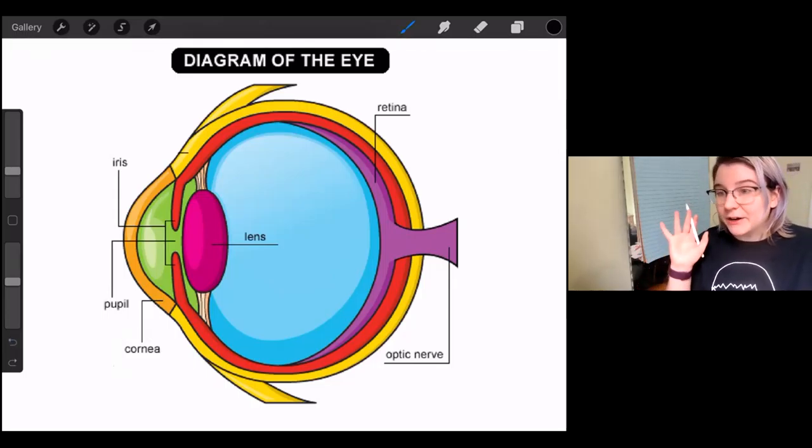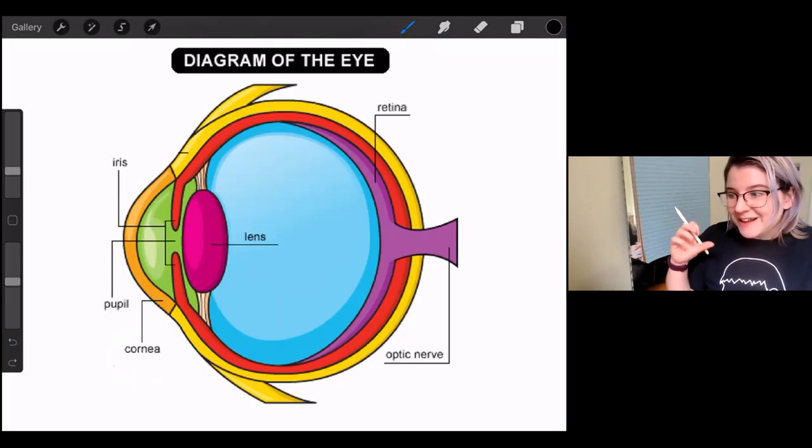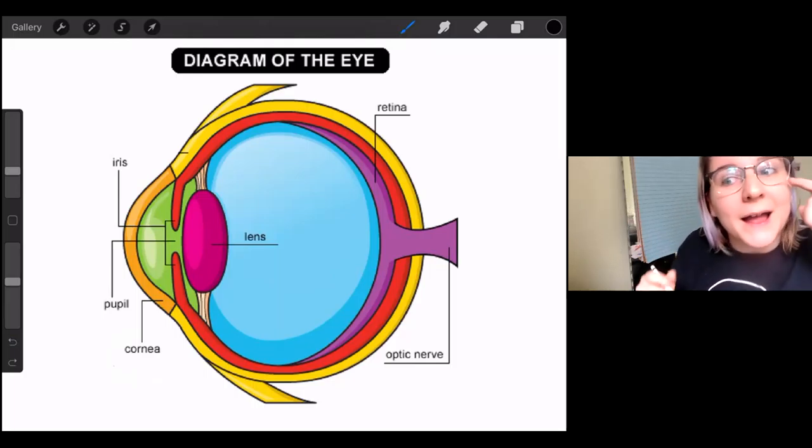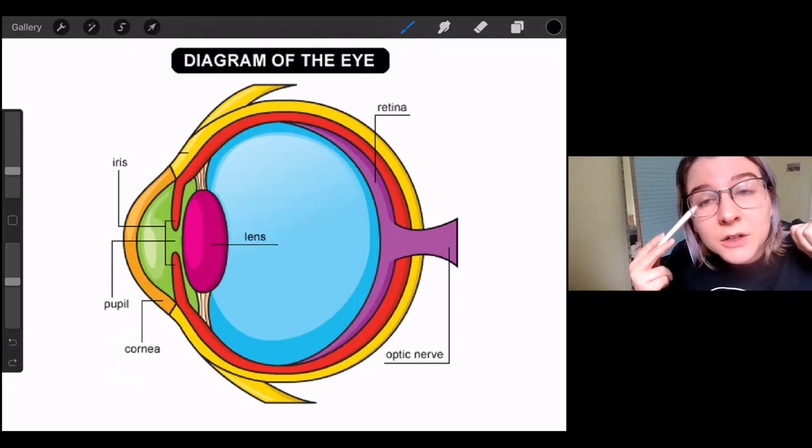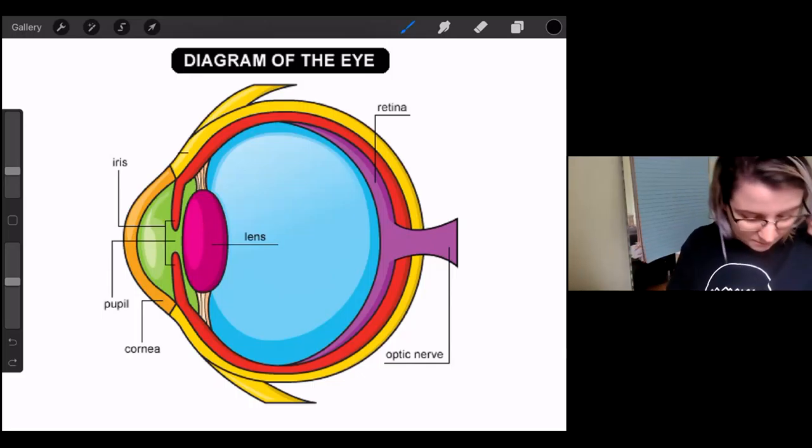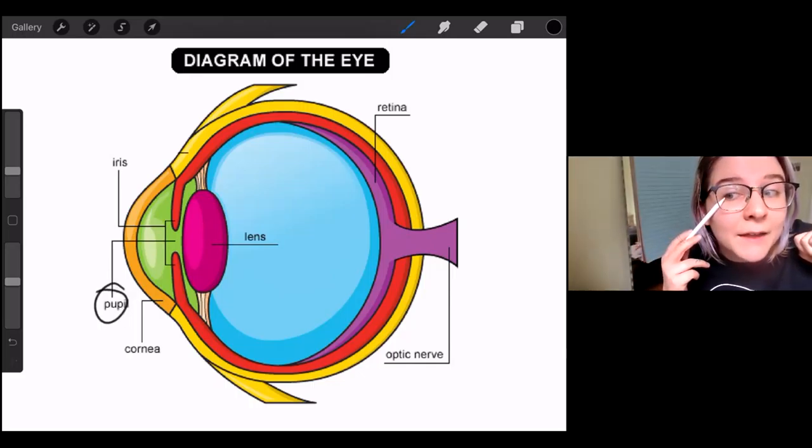Let's move on to iris. Iris is the circular structure that allows a certain amount of light to get in. So if I'm looking at my eye, you see the white part right? But then you see that bluish green circle? That's the iris. And then if we look at the pupil, that is that black dot in the middle.